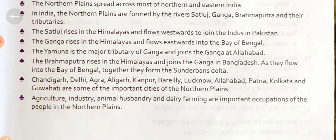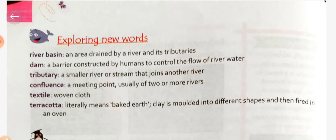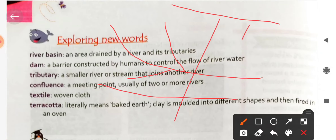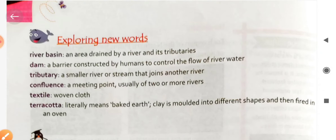In this exercise, we first look at 'Exploring New Words.' A river basin is an area drained by a river and its tributaries. A dam is a barrier constructed by humans to control the flow of water.